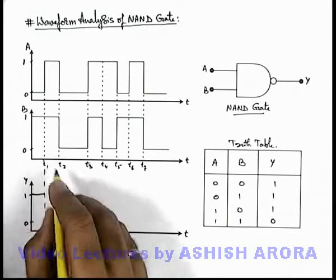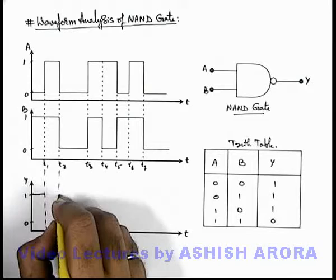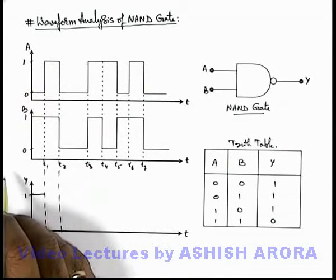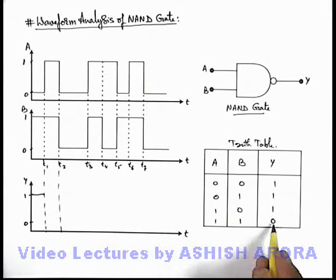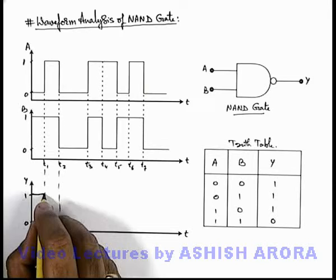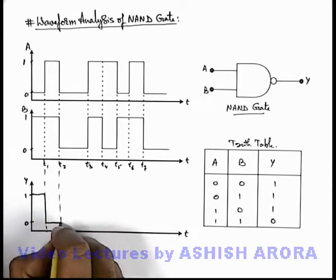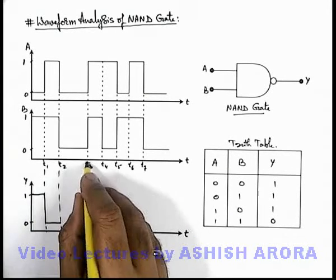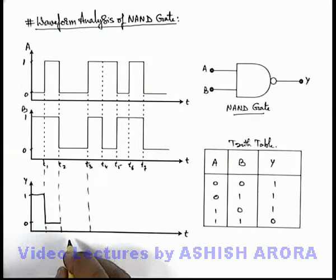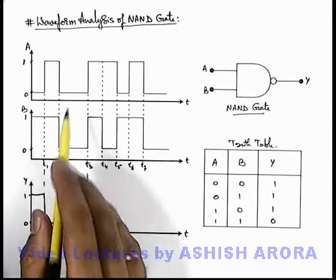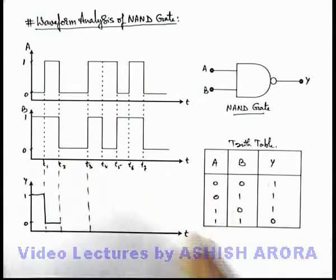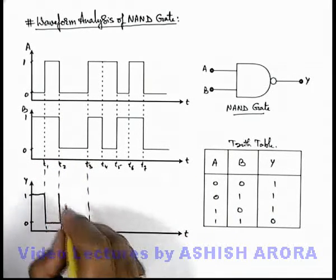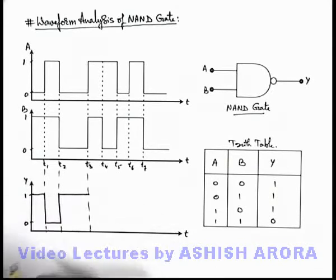Between time instants t1 and t2, we can see both signals are at high state, so correspondingly the output state should be 0. Between time t2 and t3, both are in low state, so the corresponding signal at Y will be in high state — that is, state 1.